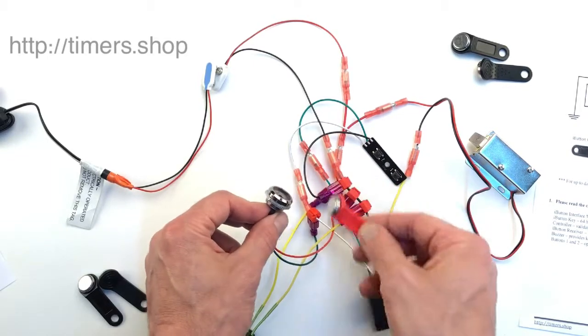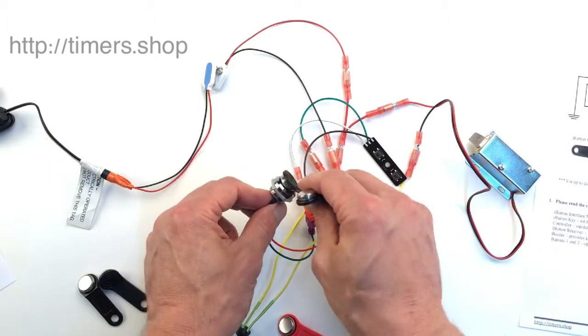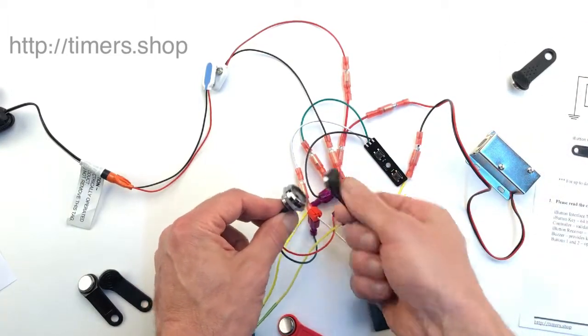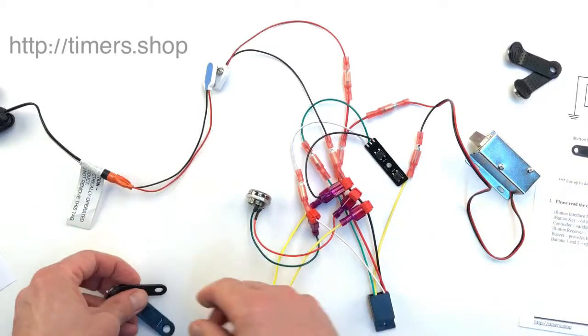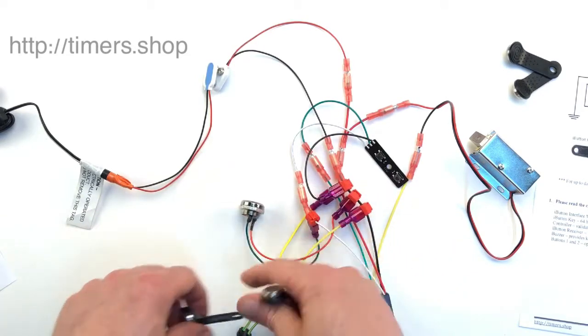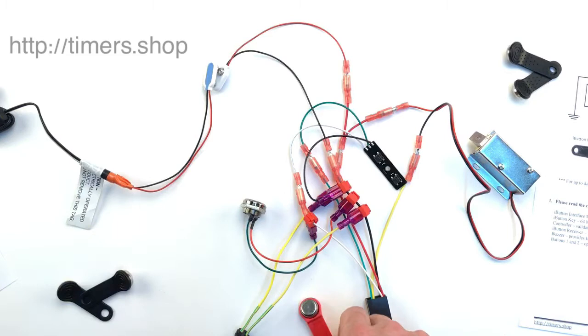To end programming, use the master key. Now both keys will work, activating the lock for two seconds. If you lose your master key, you can reset the module completely.